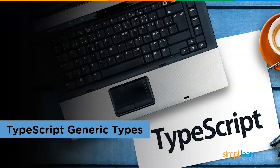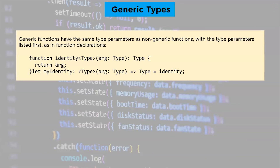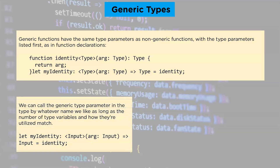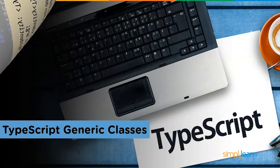Now let us look at TypeScript generic types. Generic functions have the same type parameters as non-generic functions, with the type parameters listed first as in the function declarations. We can call the generic type parameter in the type by whatever name we like, as long as the number of type variables and how they are utilized match. The generic type can also be written as a call signature of an object literal type.